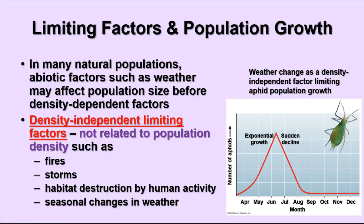Natural populations also have density-independent limiting factors — things not related at all to population density. These include fires, storms, hurricanes, floods, habitat destruction from human activity or other causes. Seasonal weather changes can also affect populations. Here we see a population of aphids — plant-eating insects. Growth continues from March through mid-June, then suddenly declines as temperature gets higher and water in the environment decreases, causing plants to pull back. That affects the aphid population regardless of its density.